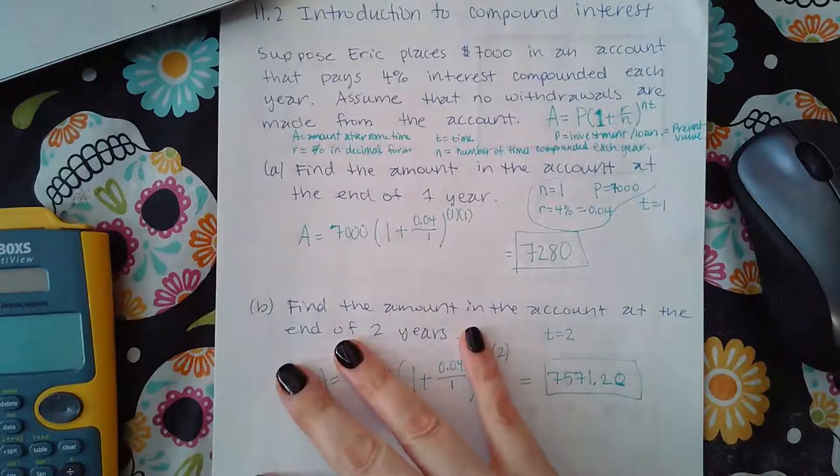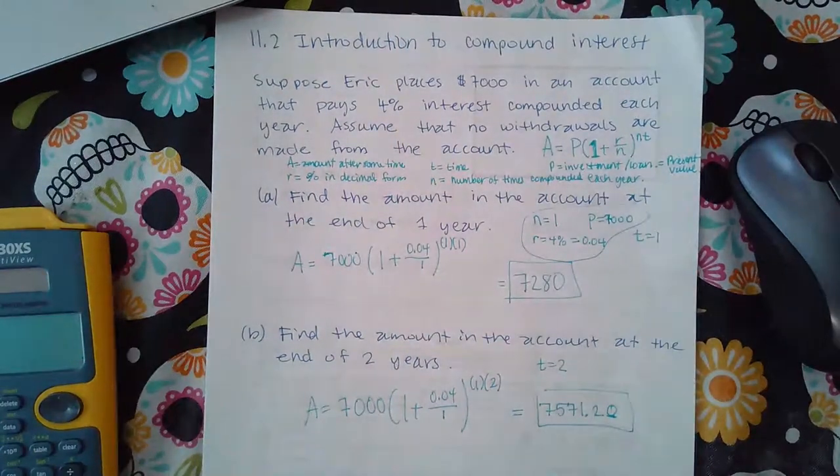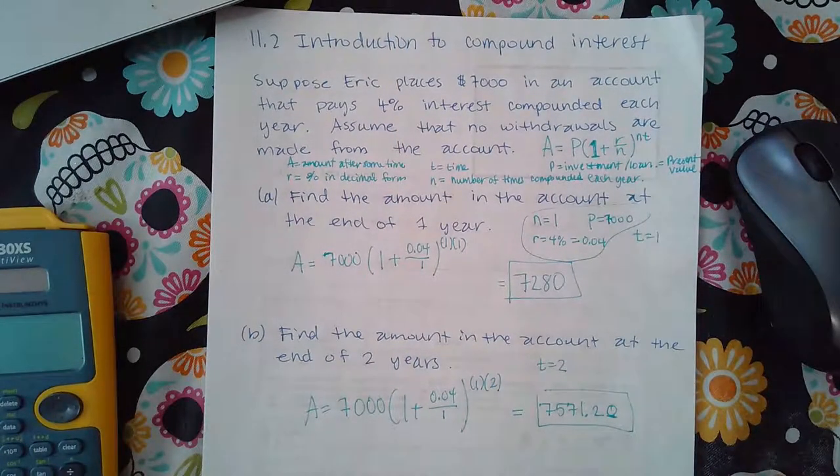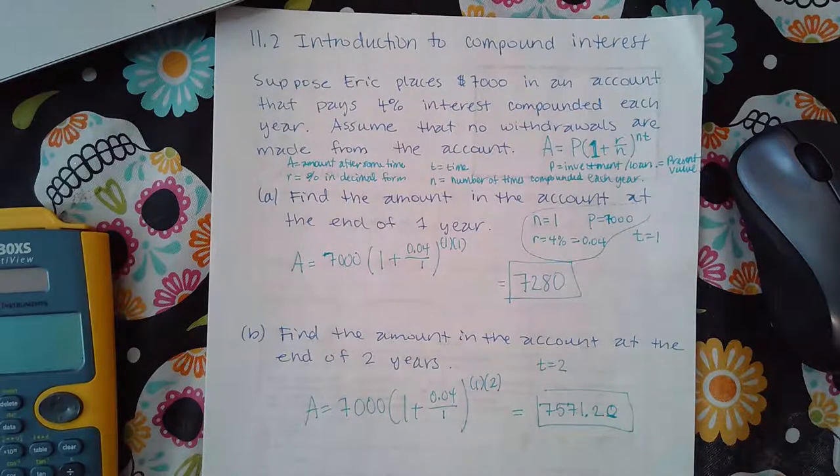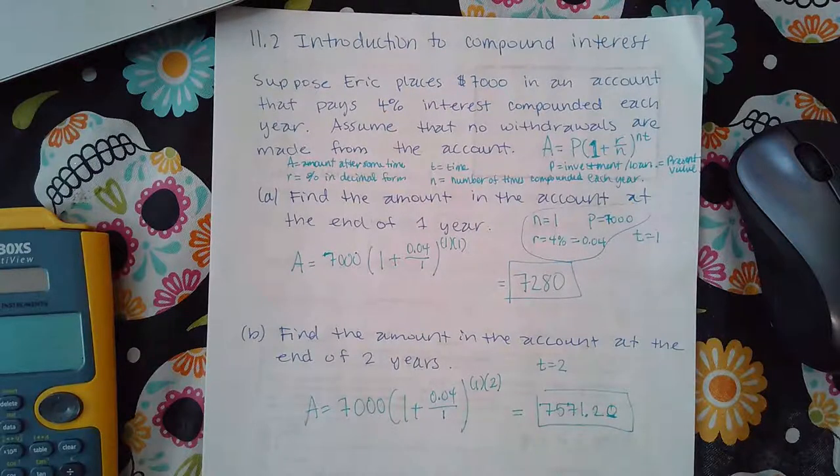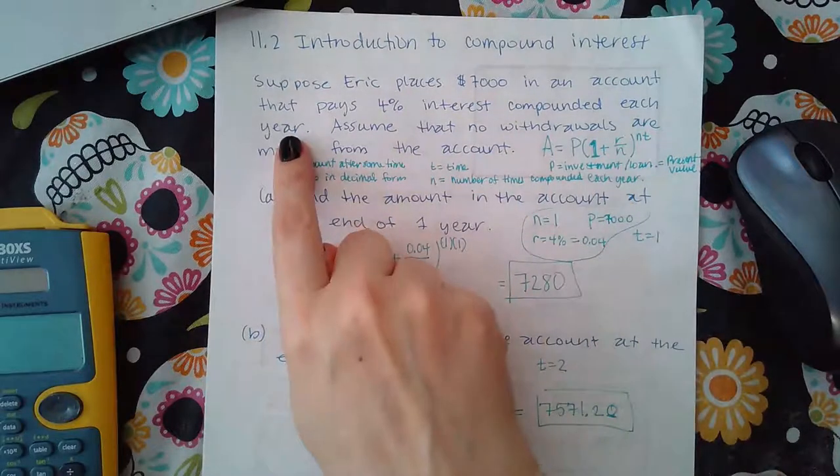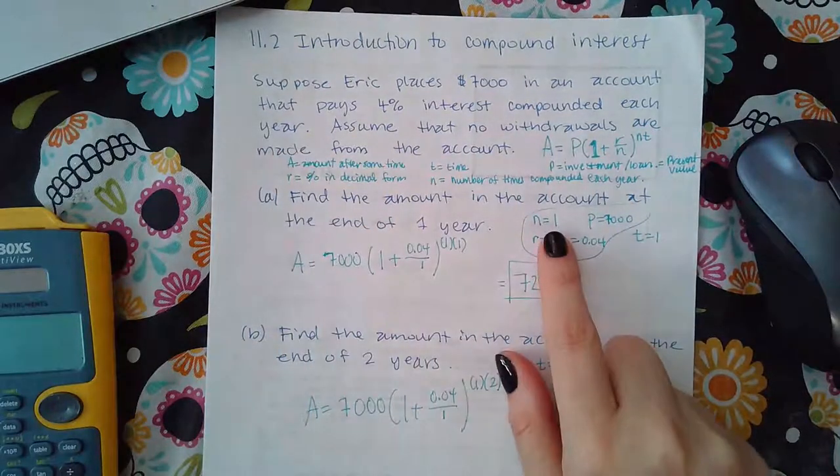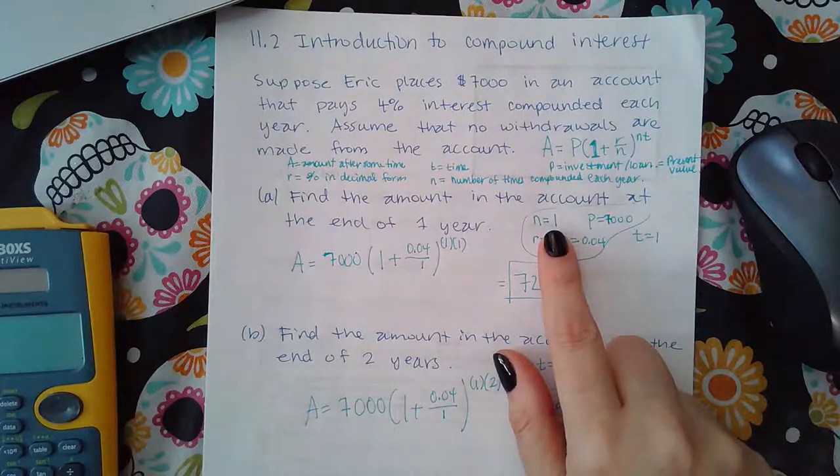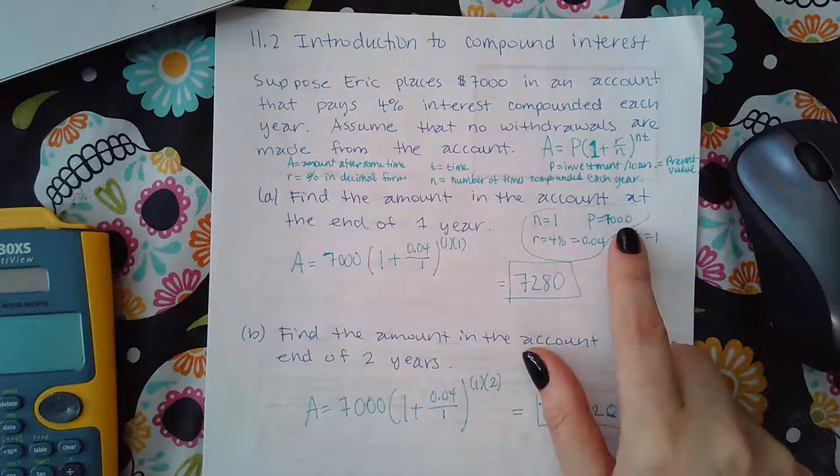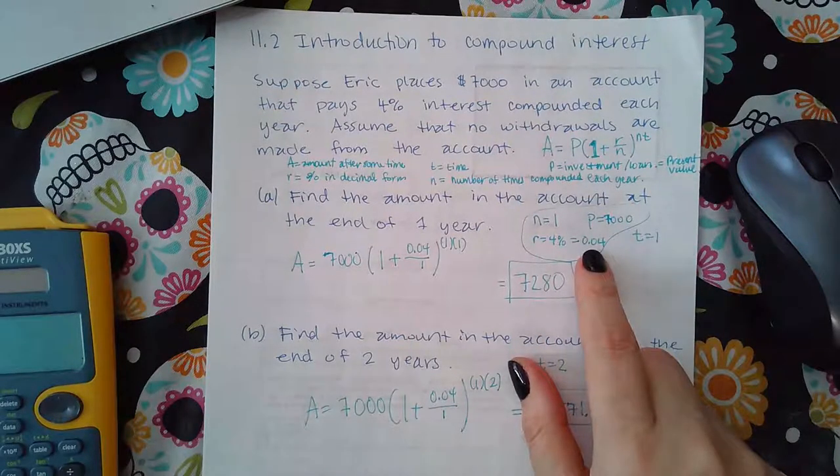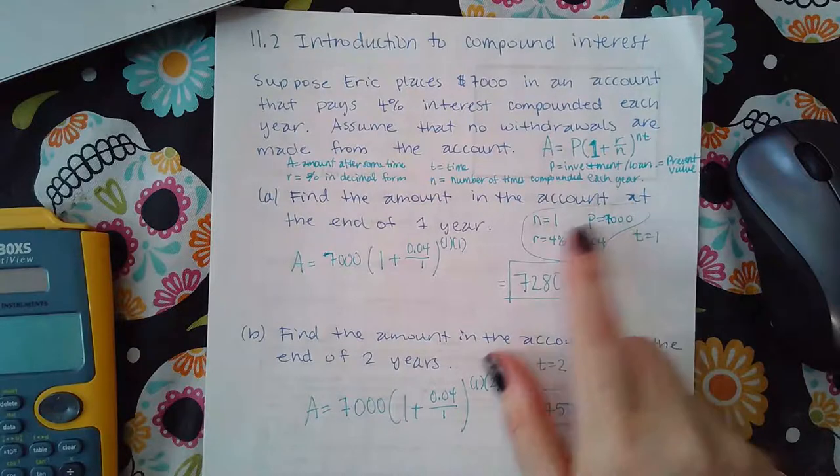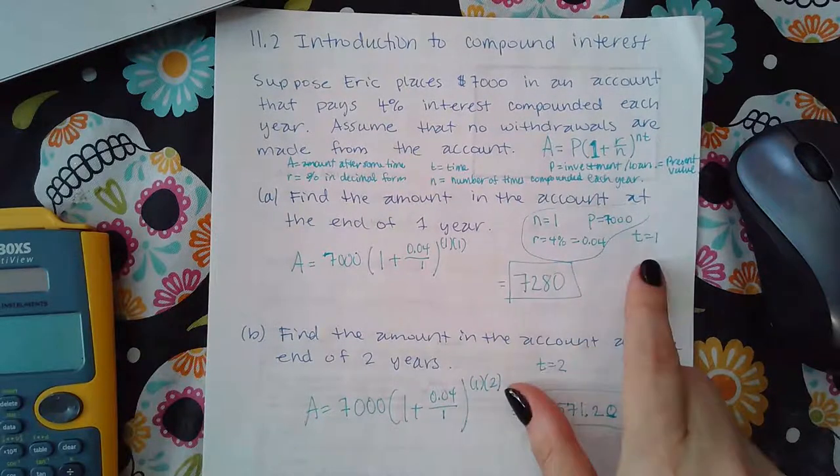So for our situation here, it says that suppose Eric places $7,000 in an account that pays 4% interest compounded each year, assuming that no withdrawals are made in the account. So it says find the amount in the account at the end of one year. So because it says compounded each year, that assumes that it means only once per year, so n is one. What am I starting with? Eric is starting with $7,000. The rate is 4%, which is also as a decimal, 0.04. And the time that they're telling me to consider here is T equal to one year.